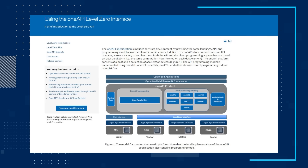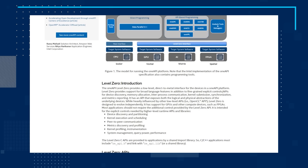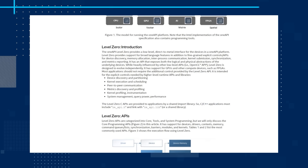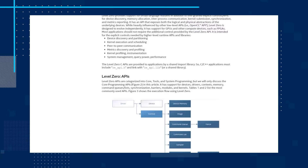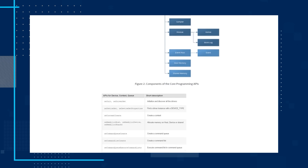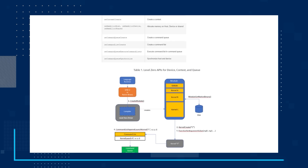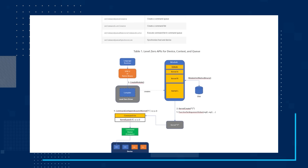In this article, you'll get a basic example to become familiar with Level Zero programming. The OpenMP offload example also provides some insights into the set of calls generated in the backend that provides a direct-to-metal inference to the offload accelerator device. Read the article and take a look at the OneAPI Level Zero specification, which contains complete API details.